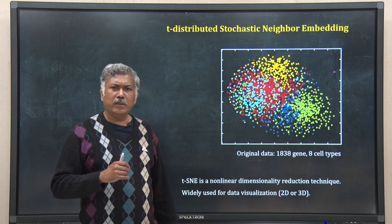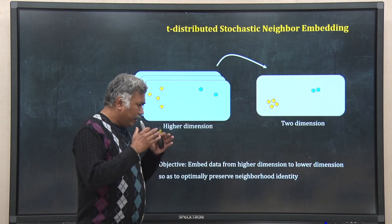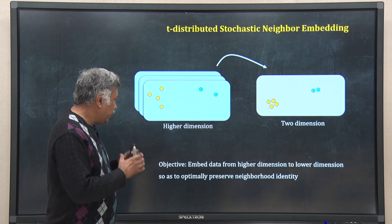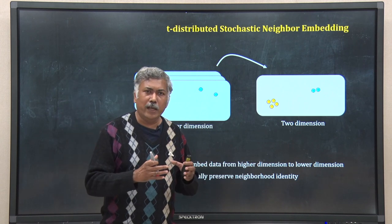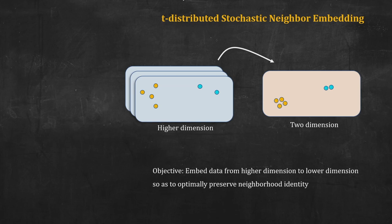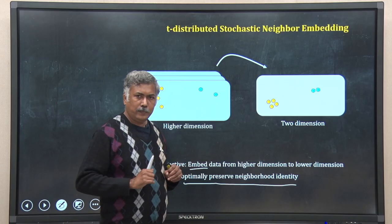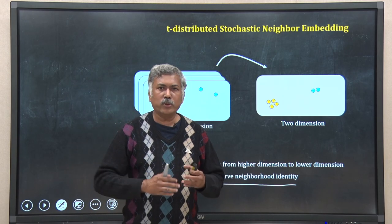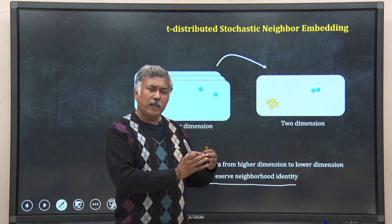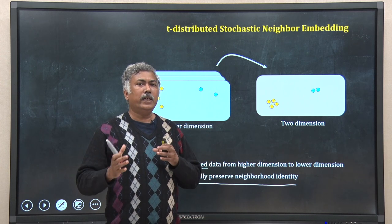Unlike other dimension reduction techniques like PCA, T-SNE focuses on the issue of neighbor relationships. It tries to embed the data in such a way that the local neighborhood information in the higher dimension is retained. The objective of T-SNE is to embed the data from higher dimension to lower dimension by optimally preserving the neighborhood identity.